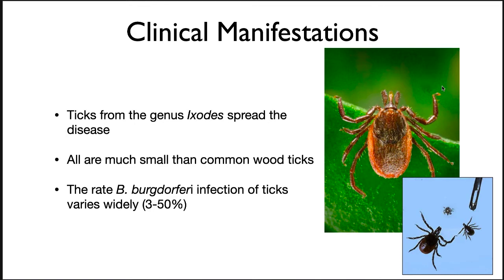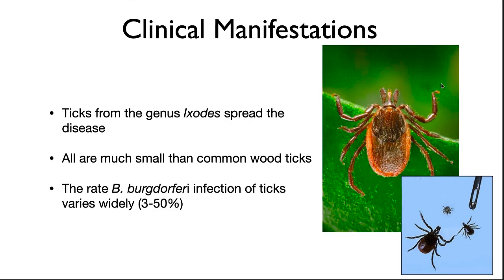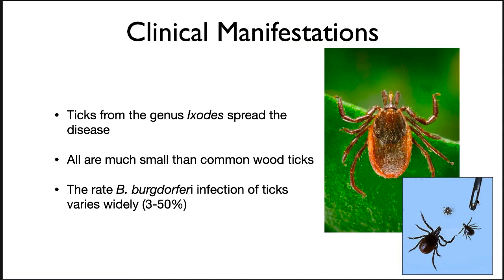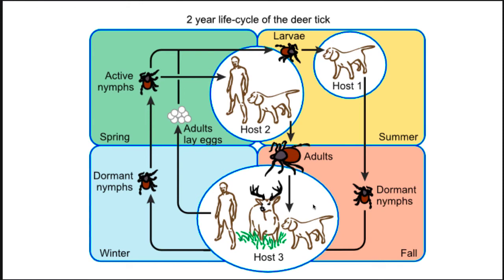Ticks from the genus Ixodes spread the disease. All are much smaller than common wood ticks, as can be seen in the photograph. If you compare the size of the various developmental stages — larval, nymph, and adult — you can see they're incredibly small. Compare that to the head of a pin. Surveys of B. burgdorferi infection of ticks vary widely, from as low as 3% of ticks in an area to B. burgdorferi infecting up to 50% of the ticks in an area.